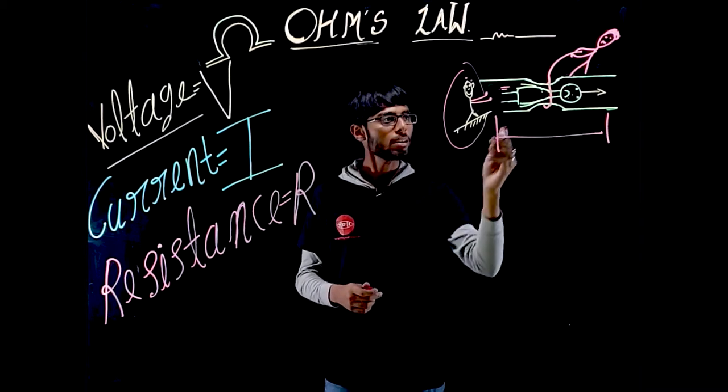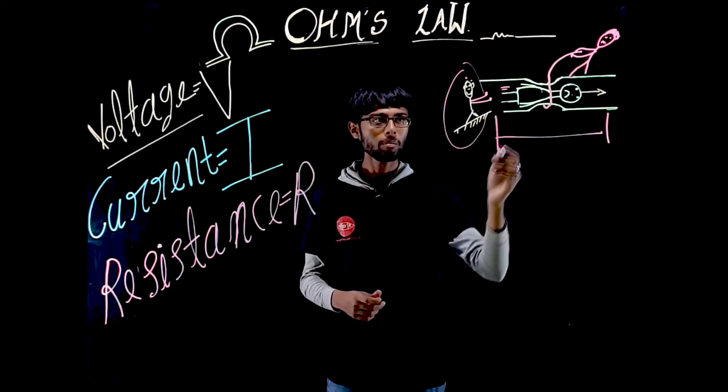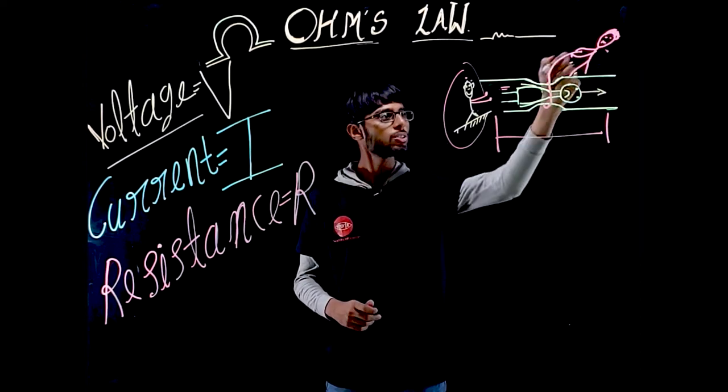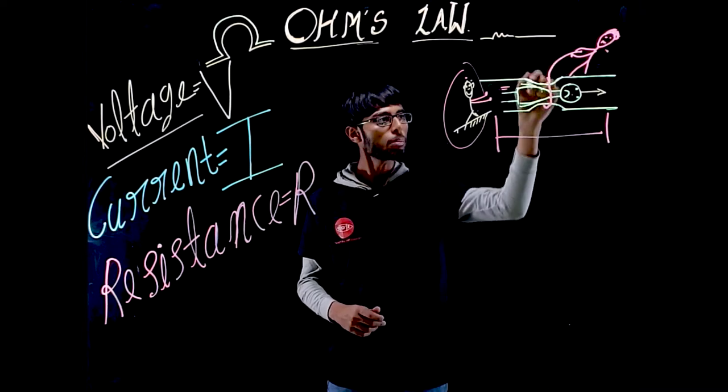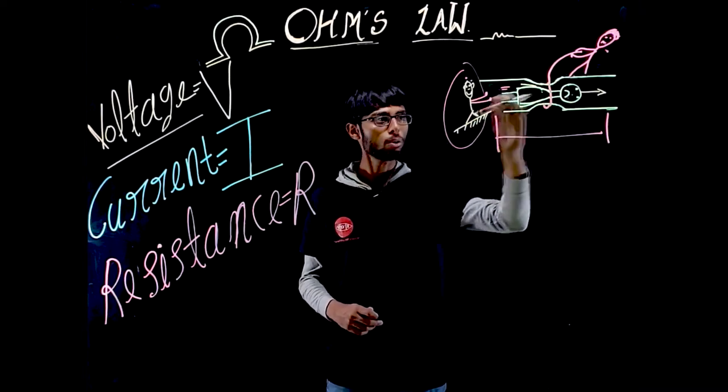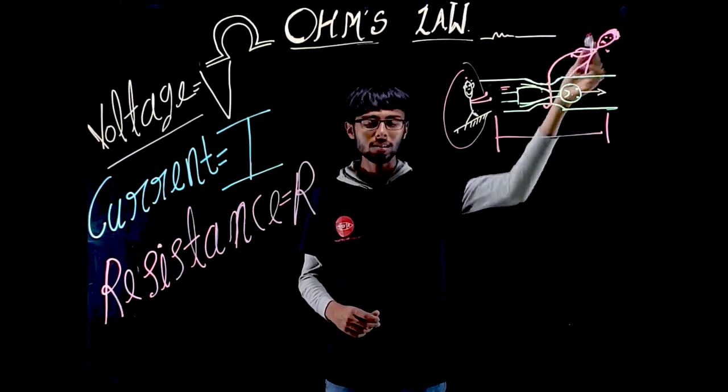The green boy who doesn't seem to be happy is the current flowing through the conductor. This boy is trying to oppose and not allowing him to go forward. So this boy is resistance.